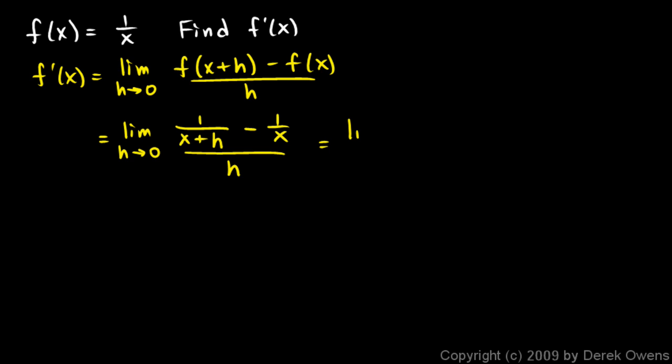So I'm going to write the limit as h approaches 0. To write those as a single fraction, I first need to get a common denominator. So this first fraction is going to be 1 over x plus h times x over x. And then we have the minus sign right there. And then I'm going to have 1 over x times x plus h over x plus h. And all of that is still over h.